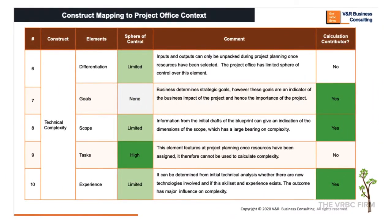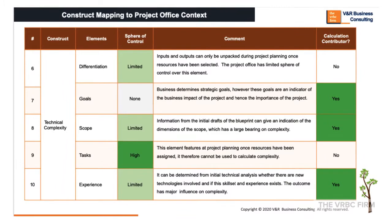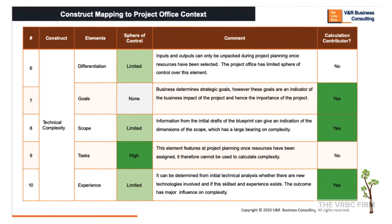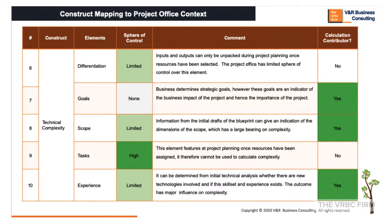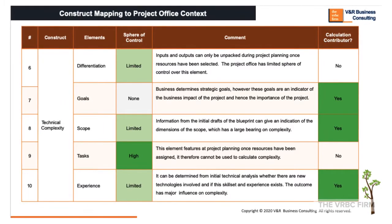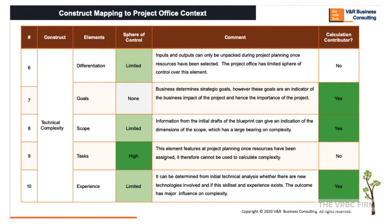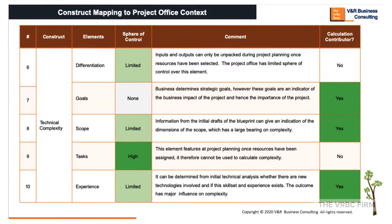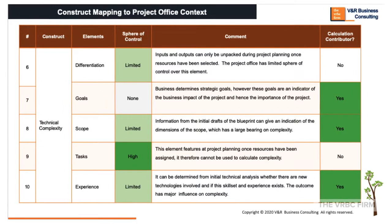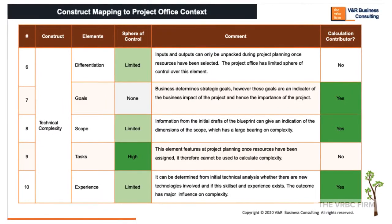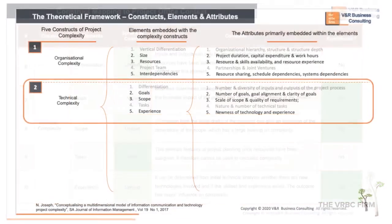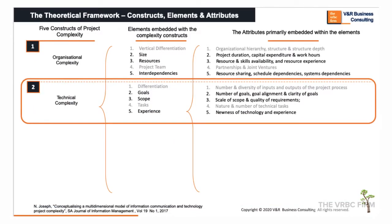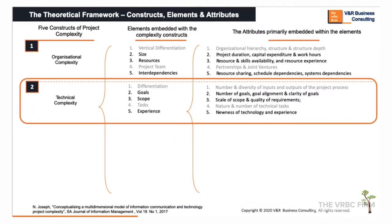Experience is closely related to the resources assessment. Additionally, similar to the system interdependencies element, the initial engagements with technical teams at feasibility assessment stage — even before putting the project in the portfolio pipeline — should have already yielded enough information to give a weighting on how this element is likely to impact the complexity of the overall project. This is how the technical complexity construct looks after mapping for this context.